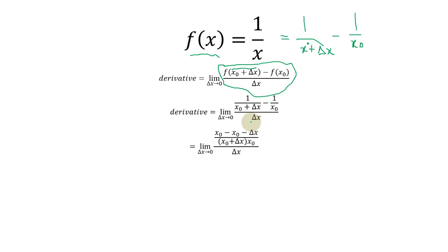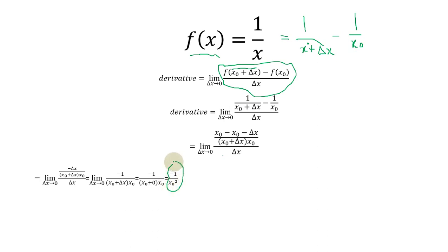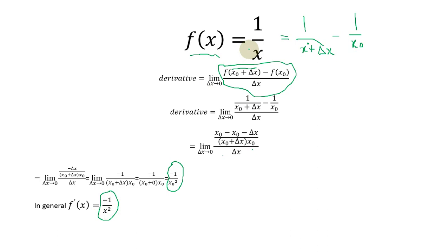Next we simplify — we take the LCM of both of these terms and arrive at the simplified expression. Further simplification gives us the slope equal to minus 1 over x naught squared. This slope is the derivative of 1 over x. In general, since x naught can be any point, the slope or derivative becomes minus 1 over x squared. So the derivative of the function 1 over x is minus 1 over x squared, written as f prime of x equals minus 1 over x squared.